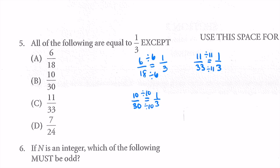Just to prove it — the options were A, B, C, D. Option D is 7/24 equals 1/3. Well, dividing the numerator by 7 and the denominator by 8 — those are different numbers. You can't divide the numerator by one number and the denominator by another and have them be equal. So our answer has to be D.